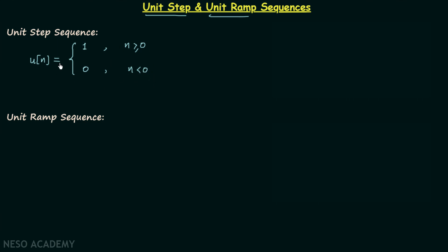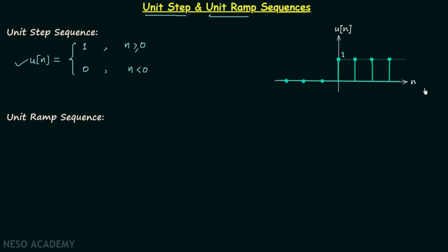This is how we define the unit step sequence u[n]. If we plot the sequence using this definition, we will have something like this. You can see that u[n] is equal to 1 when n is equal to zero, and u[n] remains 1 for all values of n which are greater than zero, up to plus infinity. On the other hand, u[n] is equal to zero when n is equal to minus 1, and u[n] is zero for all values of n which are less than zero — all negative values.